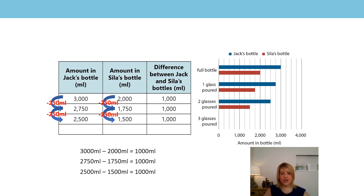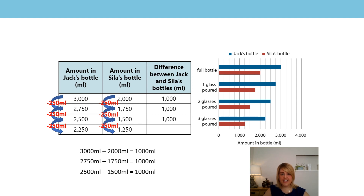Finally they're going to pour out another 250 millilitres each. I'd like you to now pause the video and see if you can calculate what the next values would be in the table. And what's the difference in their bottles now? Pause now. Well done — did you get the same as me? Jack would now have 2250 millilitres and Scylla would have 1250 millilitres. What about the difference? Did you calculate it like me? 2250 millilitres subtract 1250 millilitres to leave 1000 millilitres? If you did, well done.